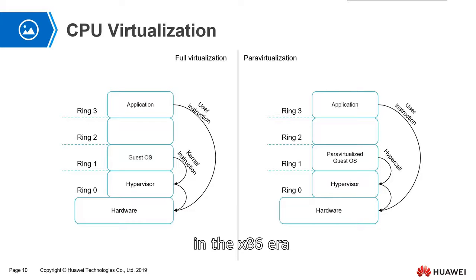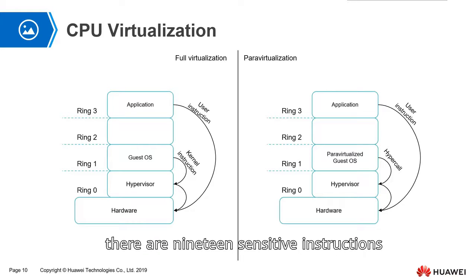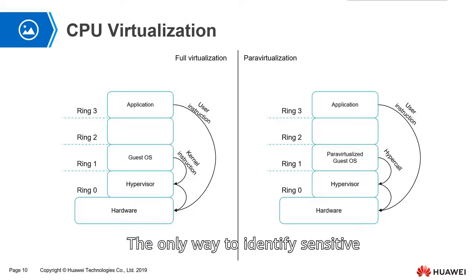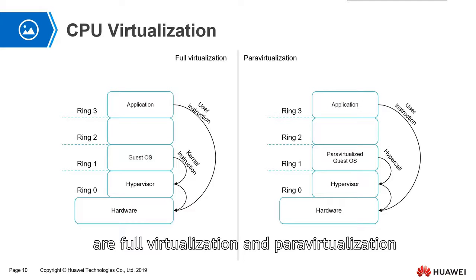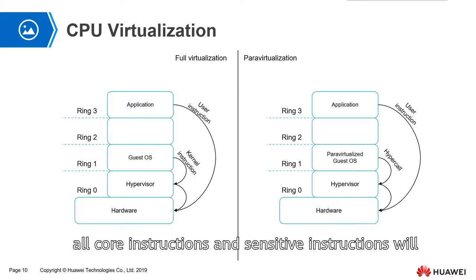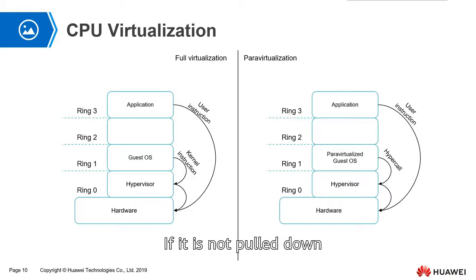However, in the x86 area, because the instruction set of the CPU is different from that of mainframes and mini-computers, there are 19 sensitive instructions that are not core instructions and belong to user instructions. The method of identifying sensitive instructions within core instructions does not work. So people developed some ways to solve this problem. The first two approaches are full virtualization and paravirtualization. In full virtualization, all core instructions and sensitive instructions are captured and checked — if it is a sensitive instruction, it will be translated. This brings certain shortcomings affecting efficiency.